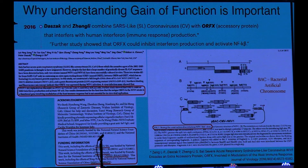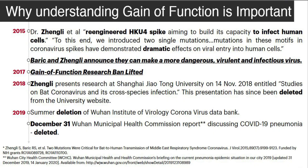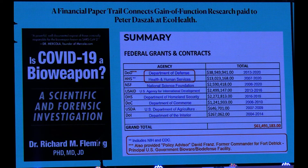In 2016 they found open reading frame 10. If you put ORF10 into a coronavirus it will blunt your immune system so you cannot make interferon to interfere with the virus — same people, same funding, same folks every time. In 2017 the gain-of-function moratorium was lifted. In 2018, Shi Zhengli reported on bat studies — that data has since been stripped from the internet. In 2019, the Wuhan Institute of Virology stripped their database, and the municipal group deleted their data in December.